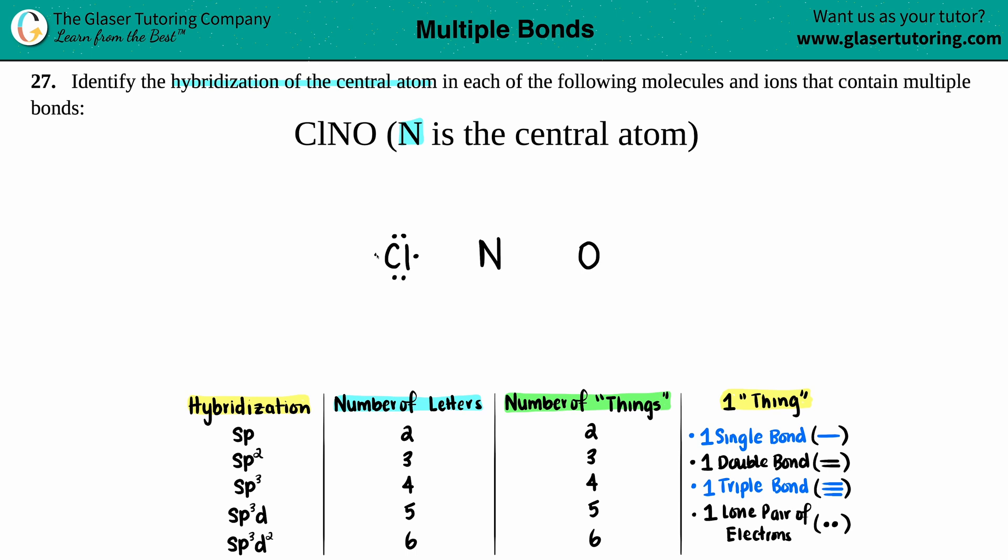Nitrogen is in group 5A or 15, so it's got five valence electrons: one, two, three, four, five. Oxygen, one group over, 6A or 16, has six valence electrons: one, two, three, four, five, six.